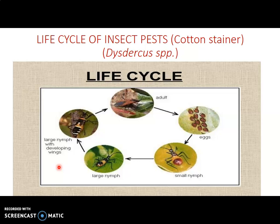Complete metamorphosis involves four stages: adult, egg, larva, and pupa. Incomplete metamorphosis involves only three stages: adult, egg, and nymph, and back to adult. A cutting stainer undergoes incomplete metamorphosis.